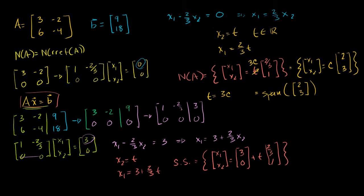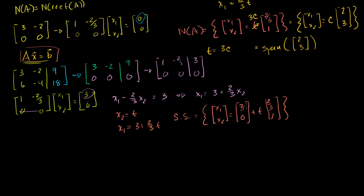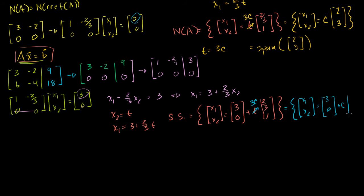We can do the same substitution as before: let t equal 3c. Then we can rewrite the solution set as x1, x2 equal to the vector 3, 0 plus c times the vector 2, 3 — since 3 times 2/3 is 2 and 3 times 1 is 3. So the solution set equals the vector 3, 0 plus any scalar multiple of our null space vector 2, 3, where c is any real number.